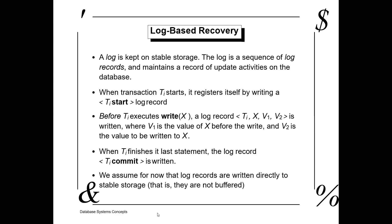Whenever transaction T1 starts, it creates a log record of 'T1 start.' Before T1 executes a write of X, a log record of the form (T1, X, V1, V2) is written. Whenever it completes one operation — for example, updating or writing a value — we have taken a general example: read A, then A = A + 100, and write A.